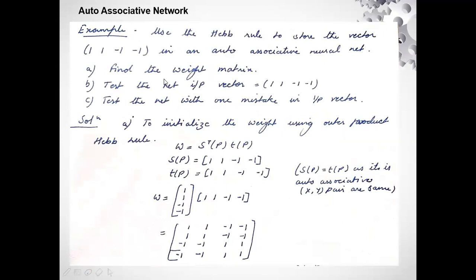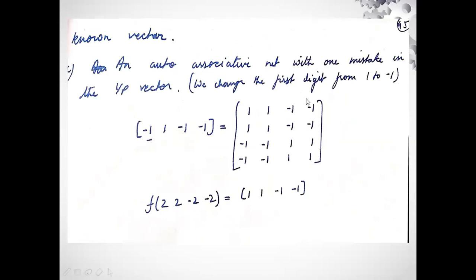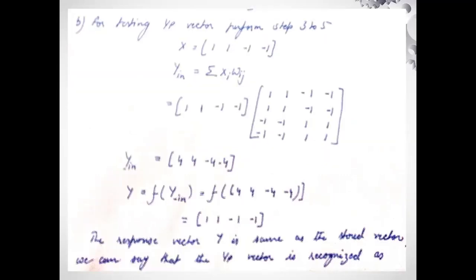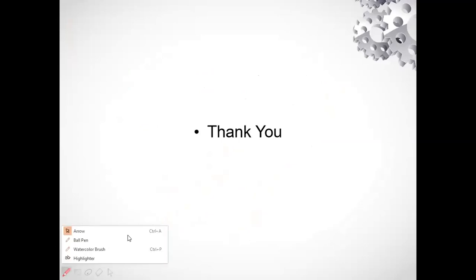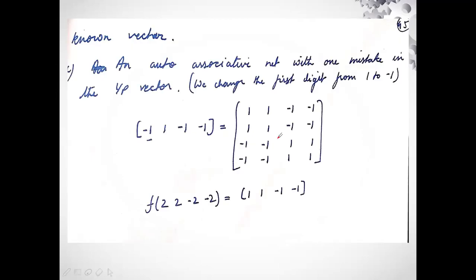For the third part, we test the network with one mistake in the input vector. The original input was [1, 1, -1, -1]. I replace the first 1 with -1, so the new input X becomes [-1, 1, -1, -1]. Multiplying this distorted input with the weight matrix gives the product [2, 2, -2, -2].